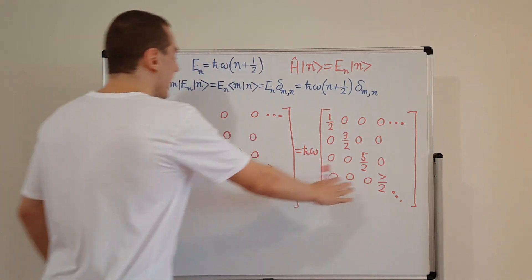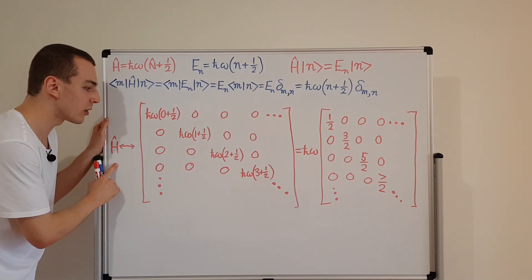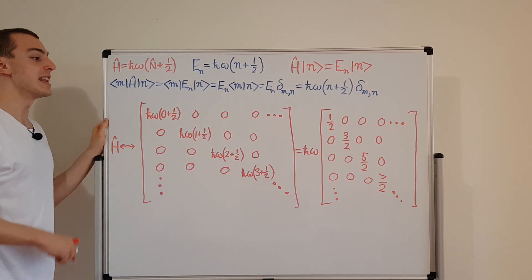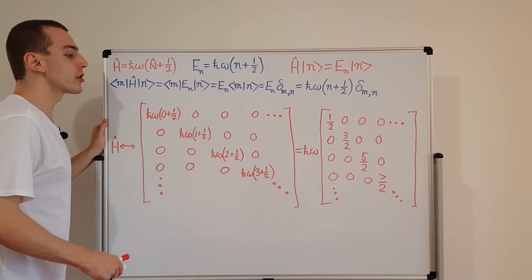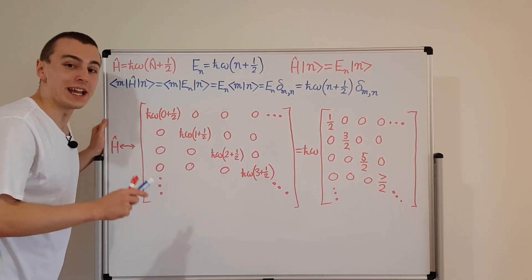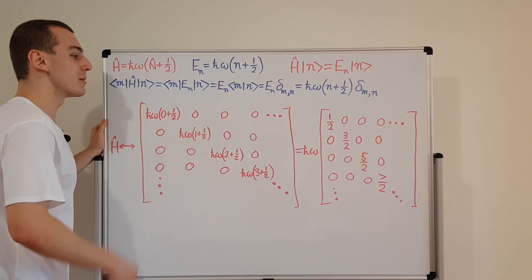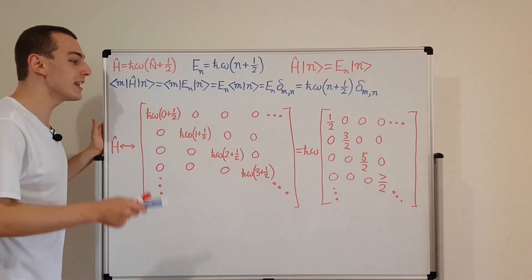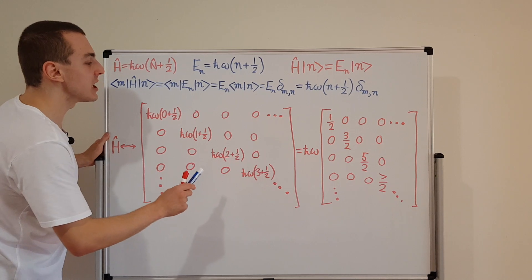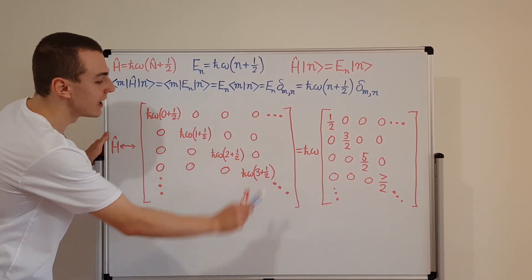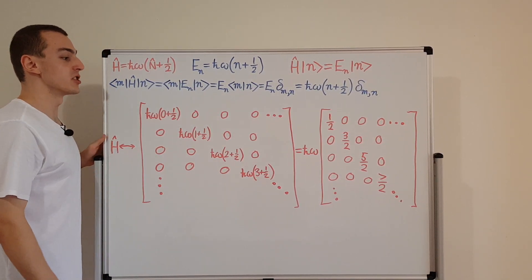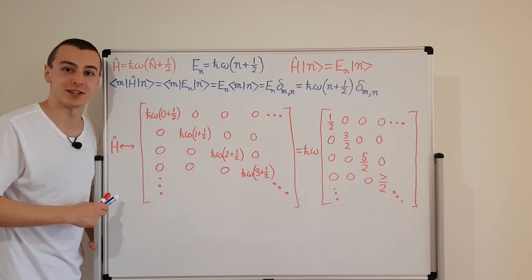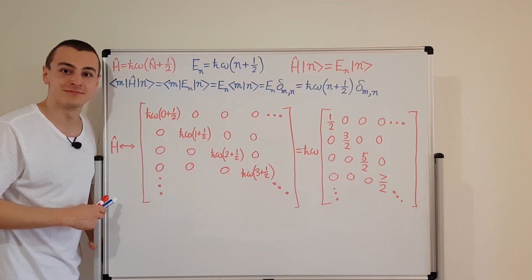So you've now seen the matrix representation of the Hamiltonian operator for the quantum harmonic oscillator — that was the goal of this video. In the next few videos, we're going to look at the matrix representations of other important operators: the position operator, the momentum operator, and the ladder operators, expressed in the energy eigenbasis.